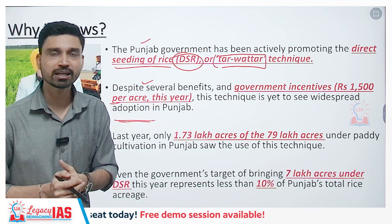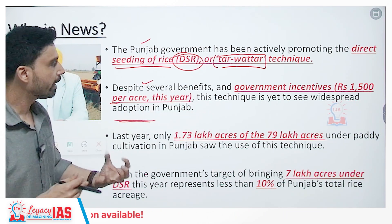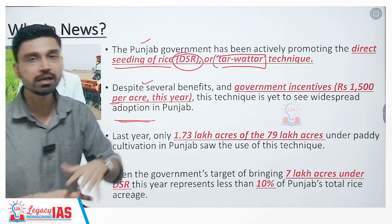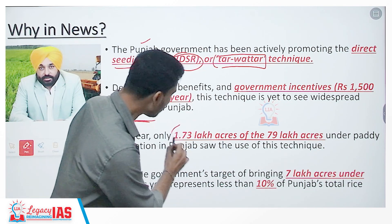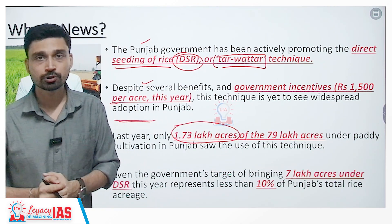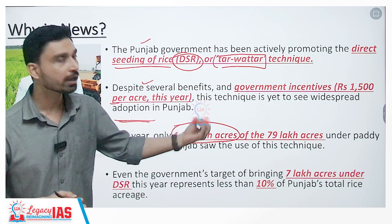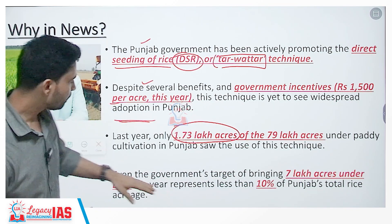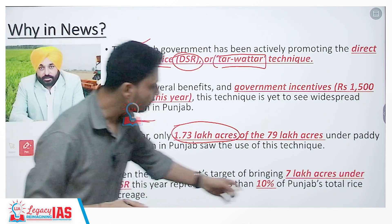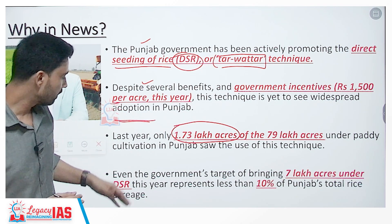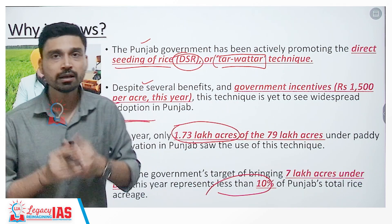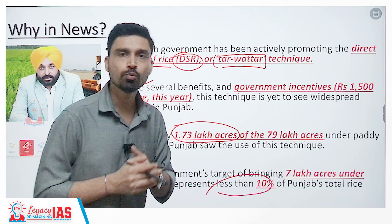From the figures and facts, Punjab has about 79 lakh acres of fields under paddy cultivation. Last year, only 1.73 lakh acres used the direct seeding of rice technique. Given such poor adoption, the Punjab government has revised its target to a moderate 7 lakh acres under DSR cultivation — less than 10 percent of the total area under paddy cultivation.